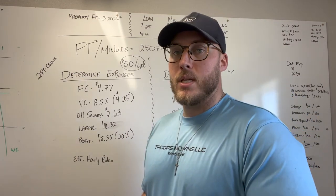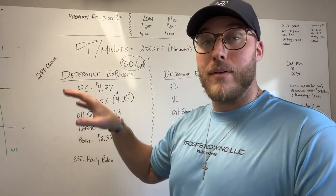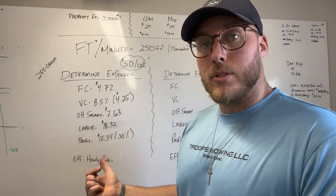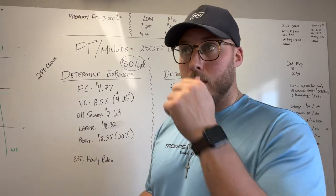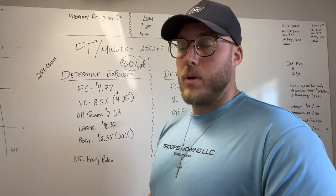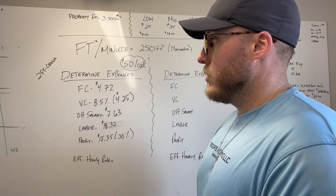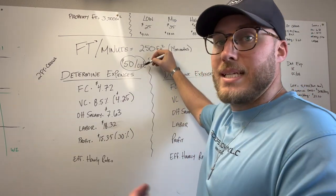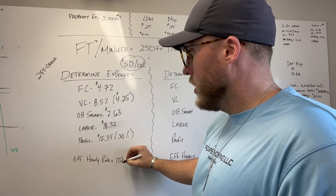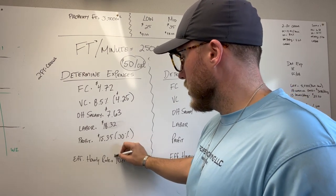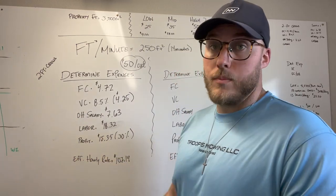The reason the profit margin is high here is because your effective hourly rate is higher than the $85 per hour you're billing. For any property size underneath your minimum charge, you're just going to make extra profit and a higher effective hourly rate, which is beneficial to the bottom line. So in this instance, our minimum is $50 and it took us 14 minutes. If you run that math, your effective hourly rate for this lawn is $107.14 - you're billing the customer at $85 per hour, but due to your minimum charge it comes out to $107.14.